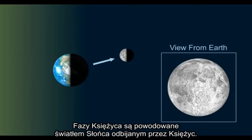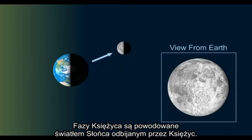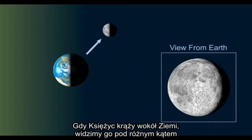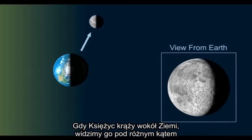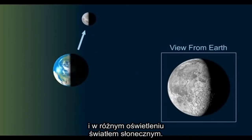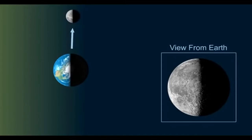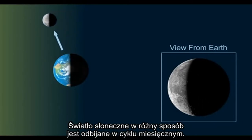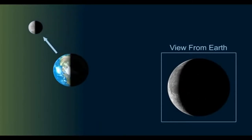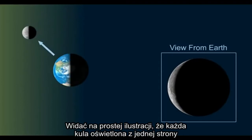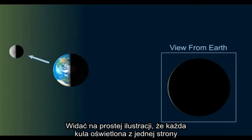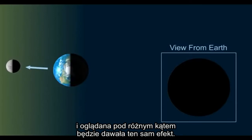The moon's phases are caused by the light of the sun reflecting off the moon. As the moon revolves around the earth, we see it at different angles in relation to the sun's light. The moonlight takes on a series of shapes as it goes through its monthly cycle. You can see with a simple demonstration that any sphere lit from one side and viewed from different angles will take on these shapes.